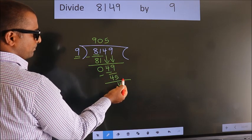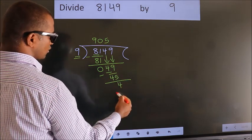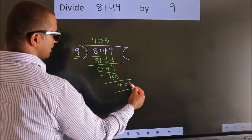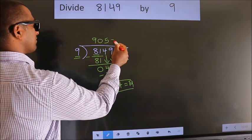No more numbers to bring down, so we stop here. This is our remainder. This is our quotient.